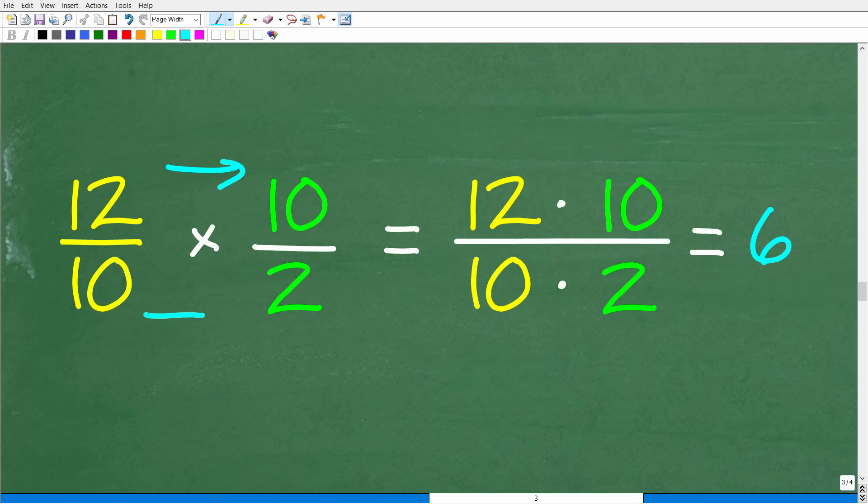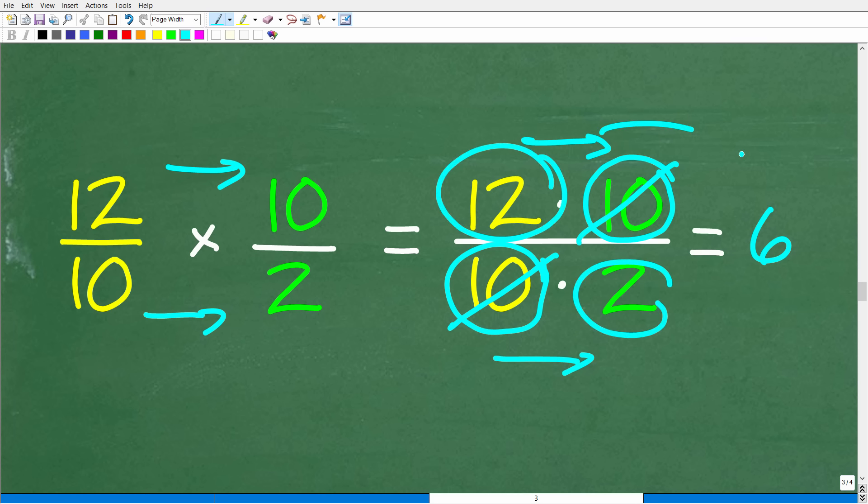The equivalent problem, 12 tenths divided by 2 tenths, is equal to 12 tenths times 10 over 2. Remember we're going to multiply the respective numerators and denominators. We have 12 times 10 over 10 times 2. But one of the best things you can do when dealing with fractions is cross-cancel any alike factors in the numerator and denominator. We have a 10 up here and a 10 down here, we can cross-cancel. So this really comes down to 12 divided by 2, which is 6.